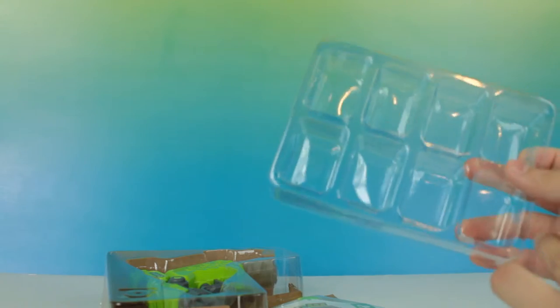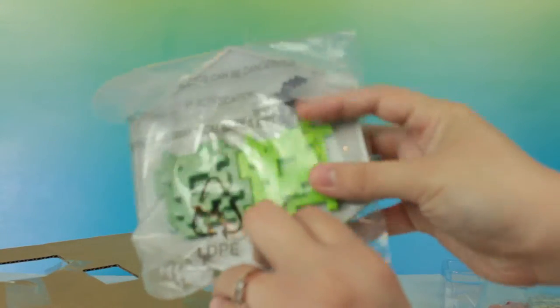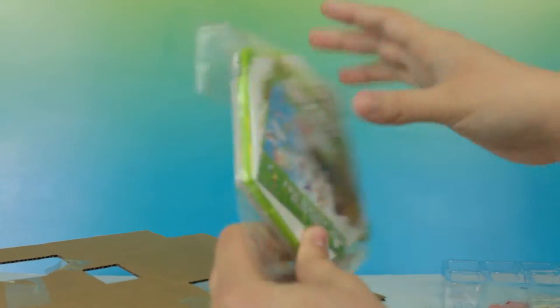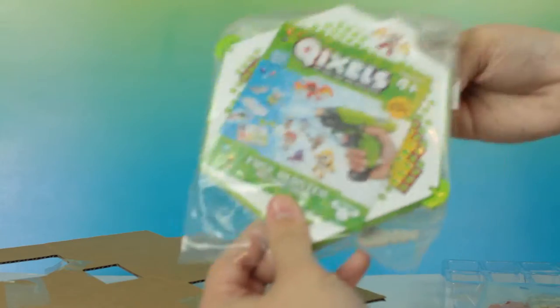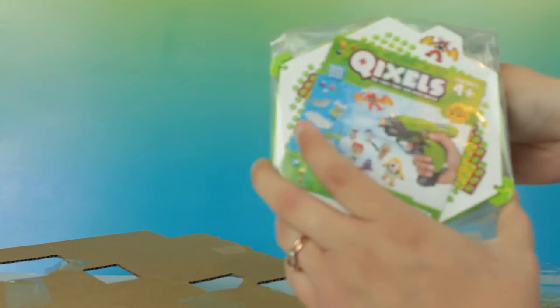Okay, so I think I got everything. First off, they give you a tray to put the squares in. Then they give you all the different colors, which I'm hoping I have enough to make what I want to make for you guys today. They give you stands, then the weapons, and then the little trays that you make your design on.